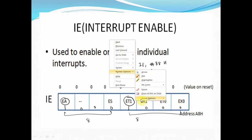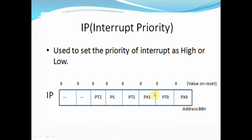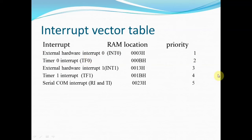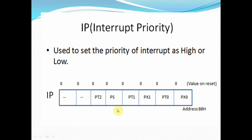The second important register is called the Interrupt Priority register, or IP register. By default, on power-on, the microcontroller has a default priority for interrupts. There are 5 interrupts in total. External hardware interrupt 0 (INT0) has the highest priority, then timer 0, then external hardware interrupt 1, then timer interrupt 1, and lastly serial communication. This is the default power-on priority of the different interrupts.